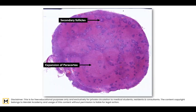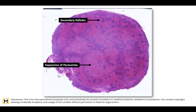Now we return to the histopathology, as we need to know how to report a case of Kimura disease. Under low power or scanner view, you should be able to identify the presence of secondary follicles — meaning they have active germinal centers.